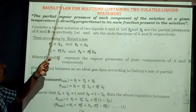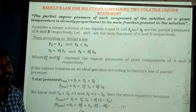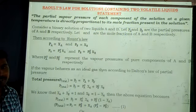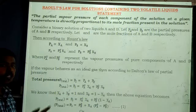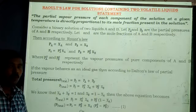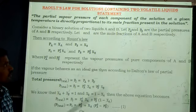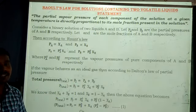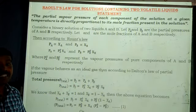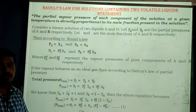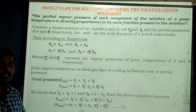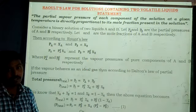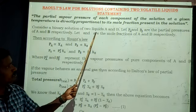Consider Raoult's Law for the solution containing two volatile liquids. Let us consider both components are volatile. That means both the solute as well as the solvent in the solution are in a volatile state. Consider a binary solution of two liquids. That solution consists of two components — one is A and one is B.